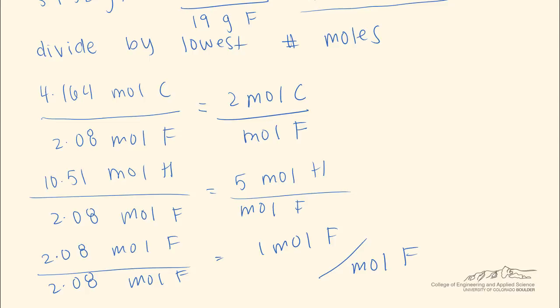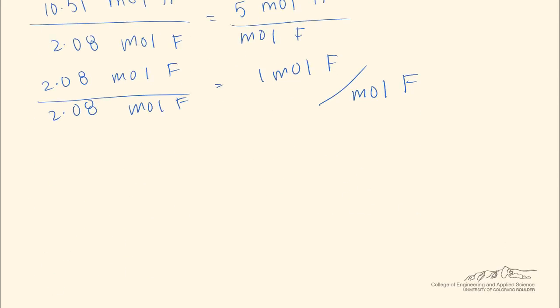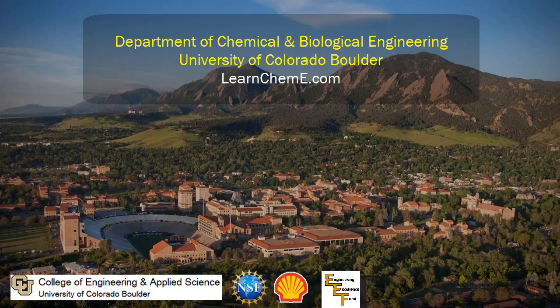So the reason we converted from grams to moles is because these ratios will allow us to find our empirical formula. And because they're ratios, it doesn't matter the amount of grams we assume. It will be the same ratio regardless of what we assume. So based on these ratios, we know that for every mole of fluorine, we have 2 moles of carbon and 5 moles of hydrogen. And this is the empirical formula.